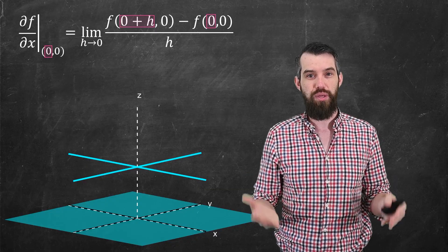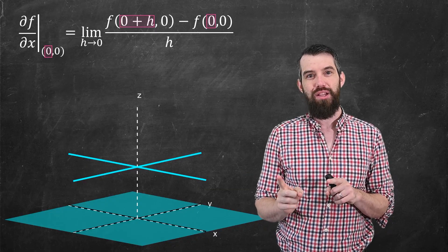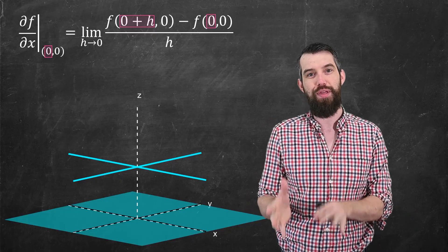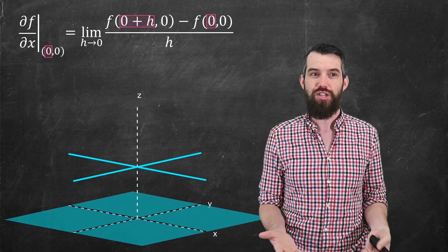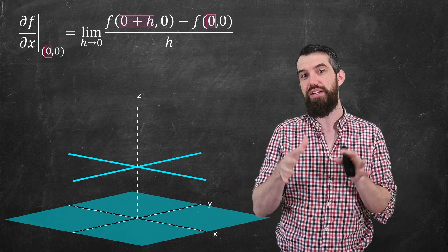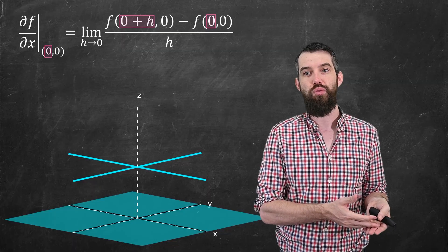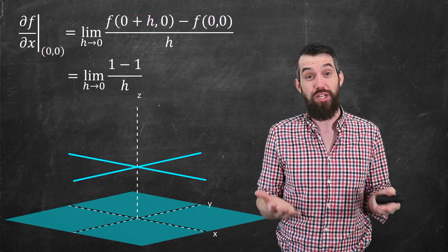Now, let's actually try to compute this. In this case, the x component actually doesn't matter because the y component is 0 in both cases. And this function is a function that if the y component is 0, then the function has a height of 1.